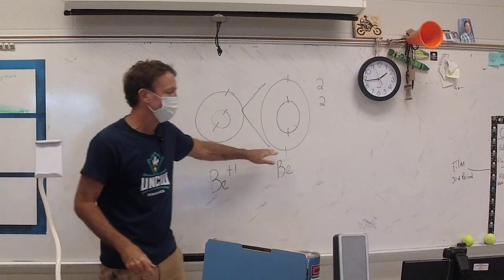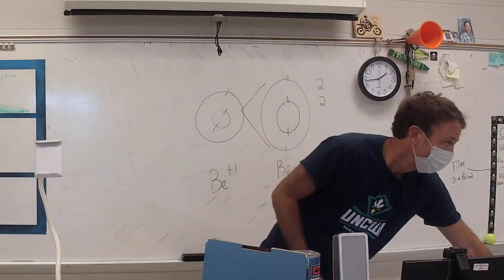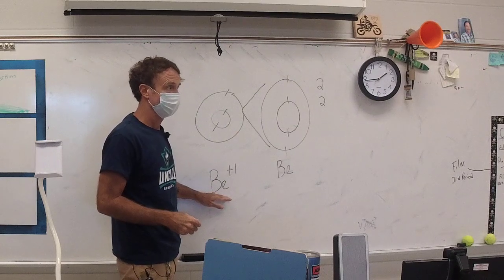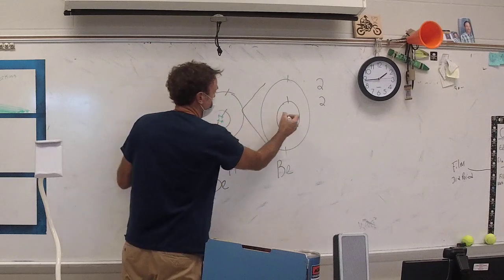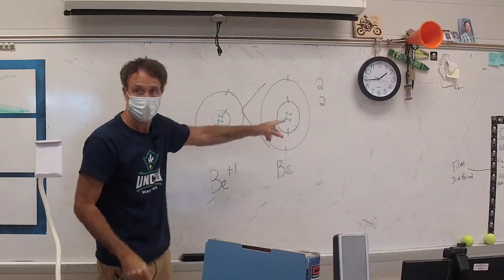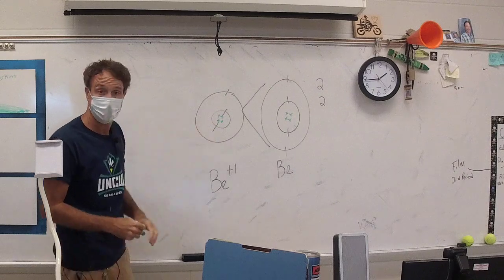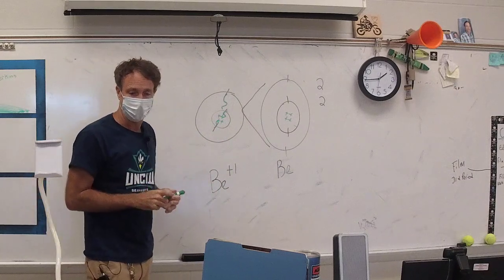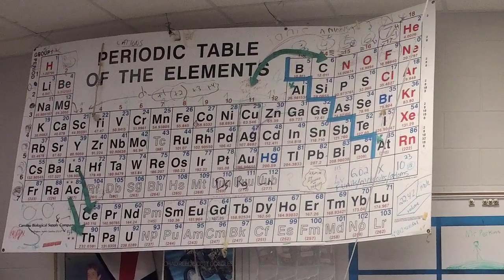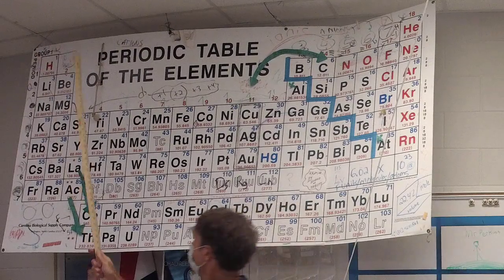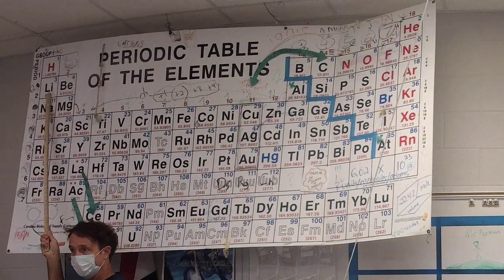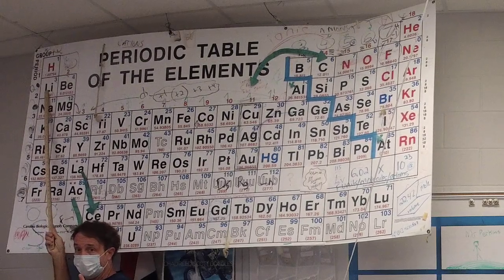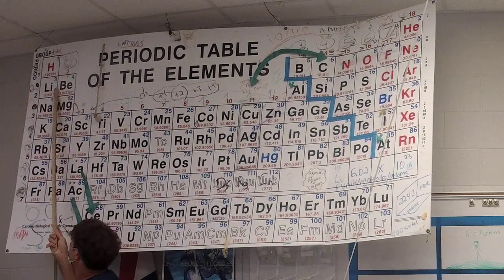Why is beryllium plus one smaller than regular beryllium? It's still beryllium — we still have four protons in both cases. But in neutral beryllium, those four protons are pulling on four electrons. In Be⁺¹, the four protons are only pulling on three electrons, so those electrons are actually pulled in a little bit harder. Be⁺¹ ends up looking like lithium, but smaller, because it has only three electrons yet still four protons.